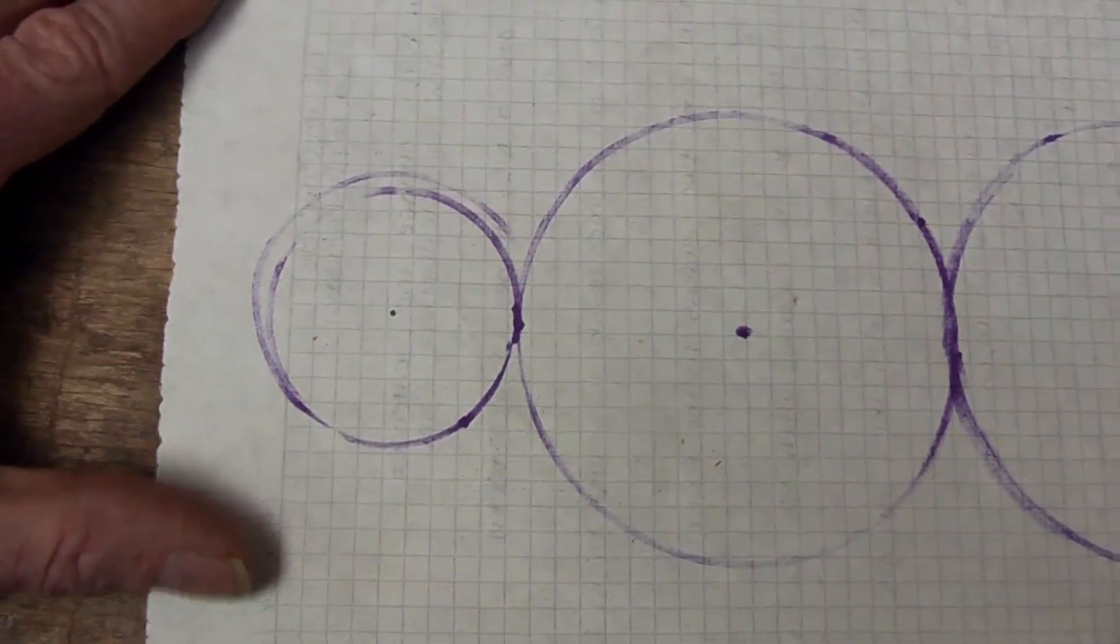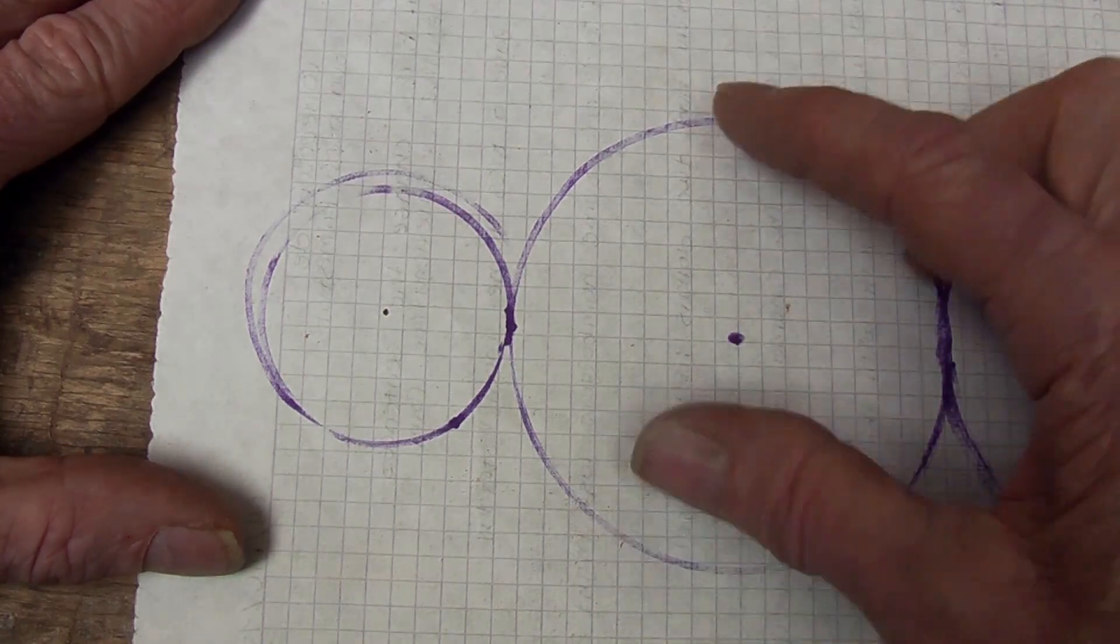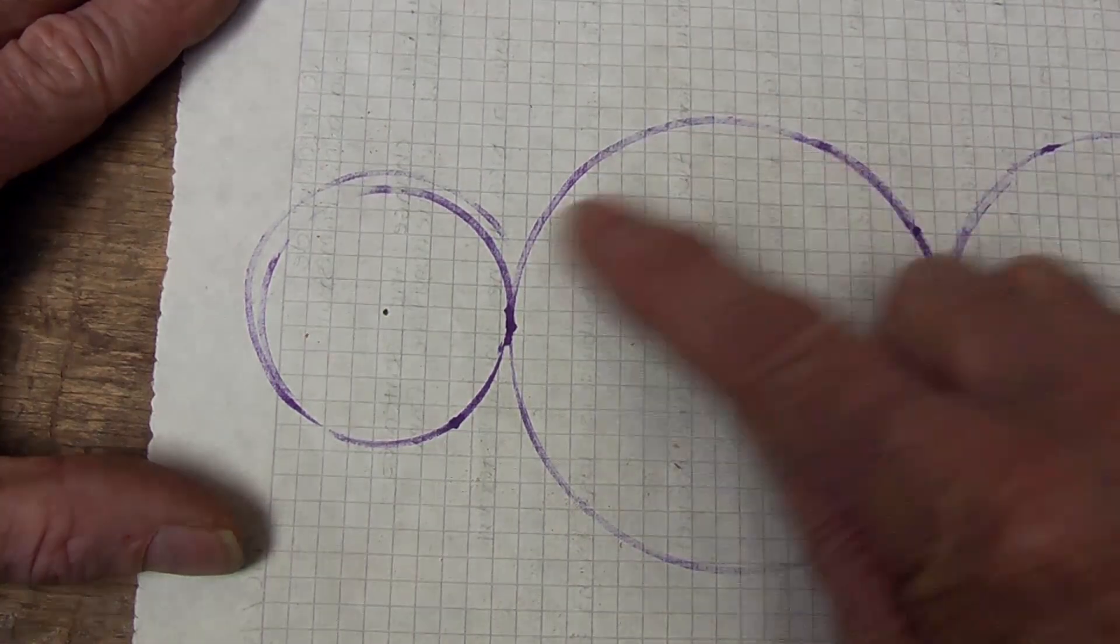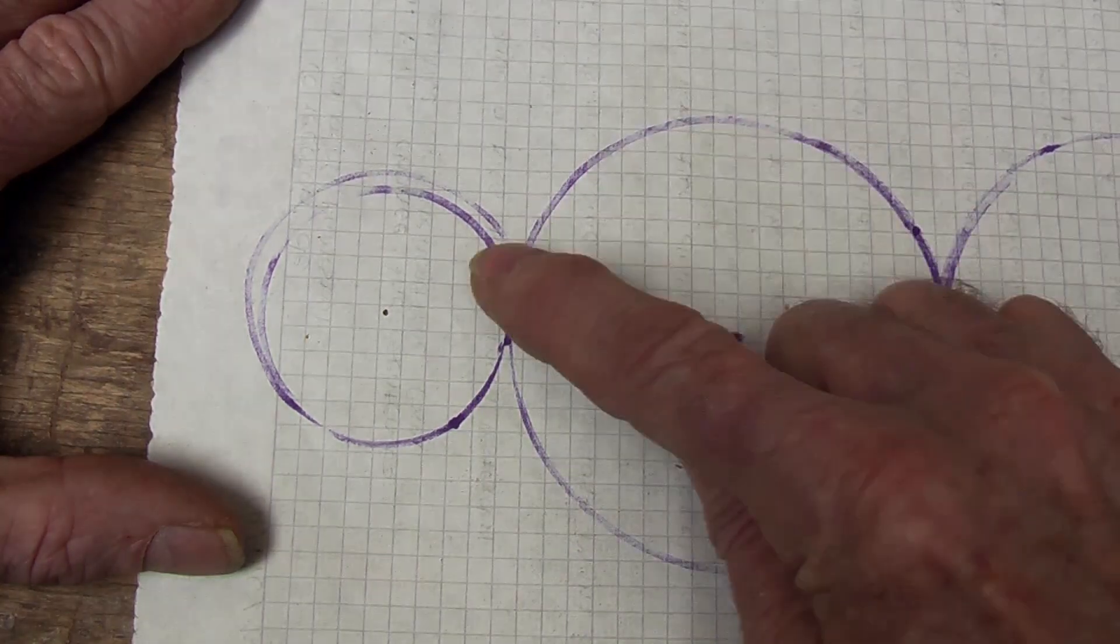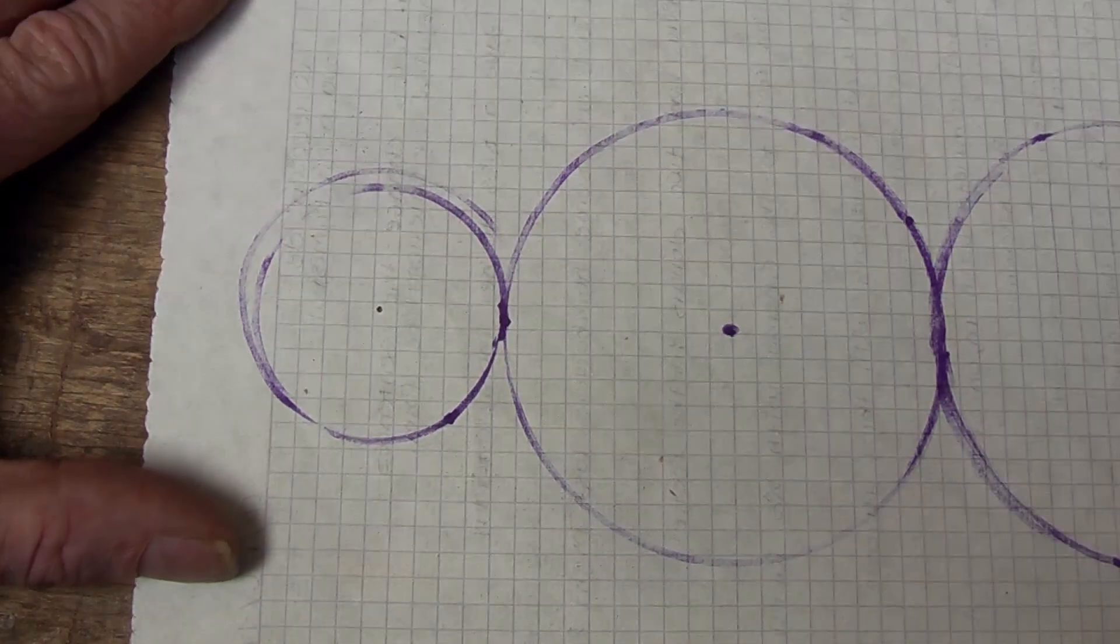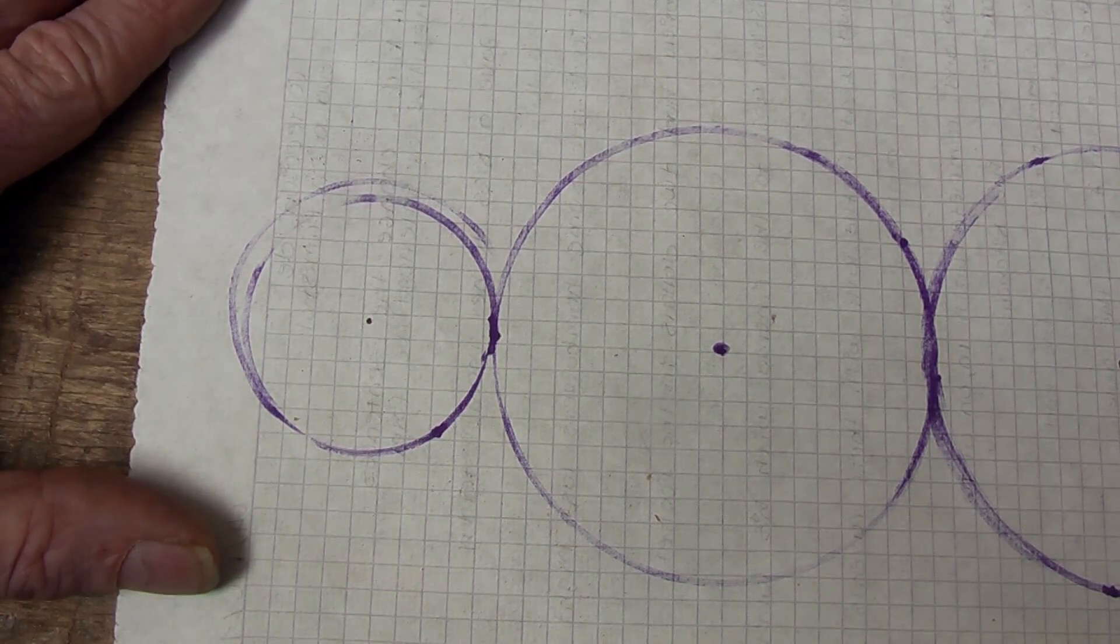Now at this point we can start to play with maths by varying the sizes of those circles. If this one has twice the circumference of this one, every one time that this goes around, this one will go twice. So this way we can start playing with ratios mathematically.